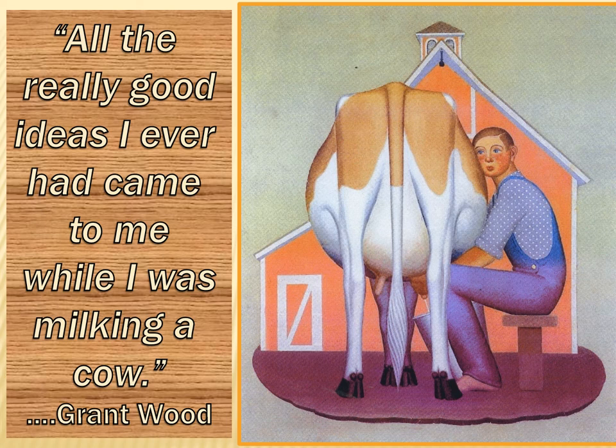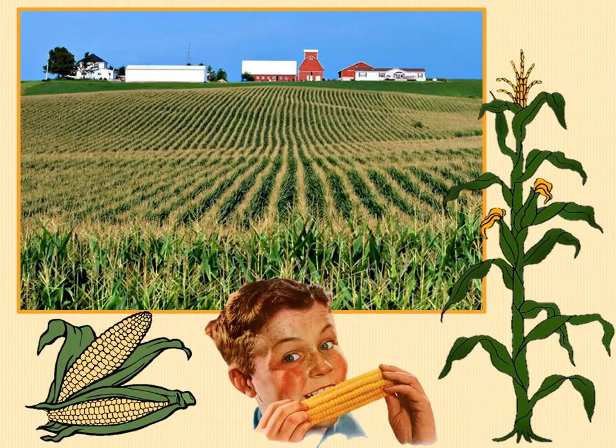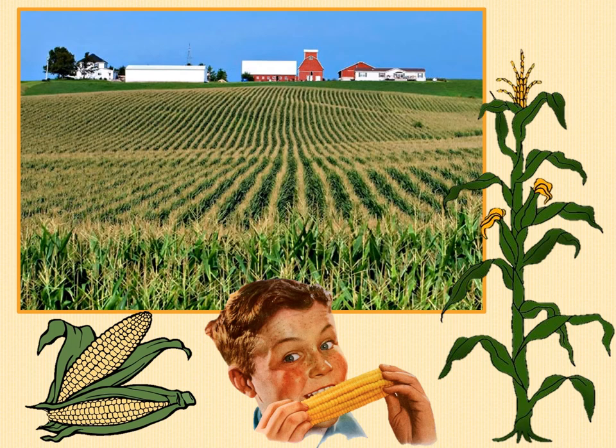Grant's parents were very poor. They didn't have a telephone, radio, cars, or even electricity. Grant entertained himself by drawing all kinds of pictures of the things around him. He loved to explore the nearby countryside where they grew lots of corn. Do you like corn on the cob? Grant Wood painted young corn growing in the field as well. The title of this landscape is Young Corn. A landscape is a painting of the outdoors.